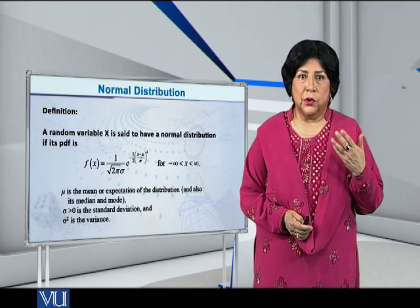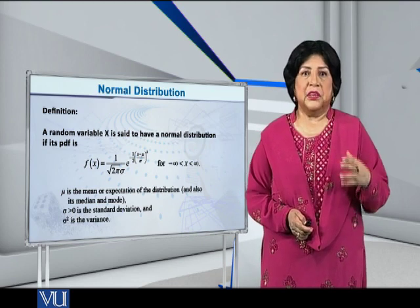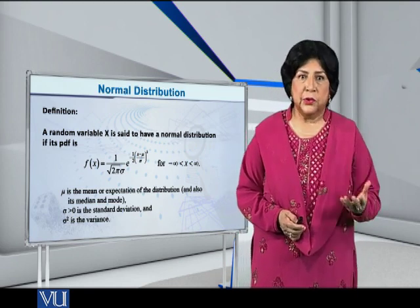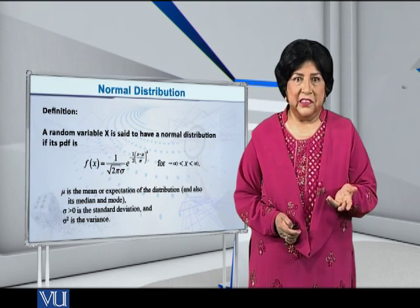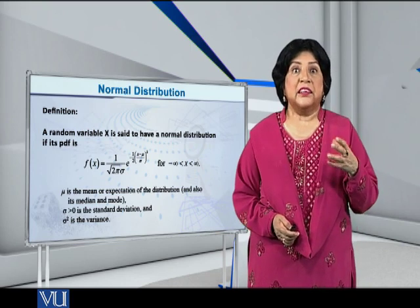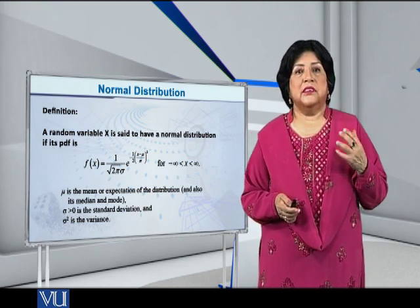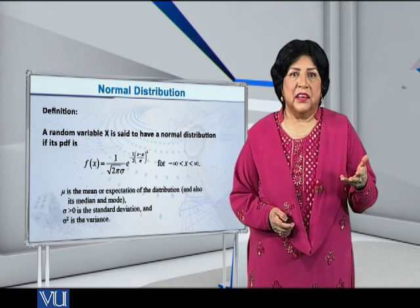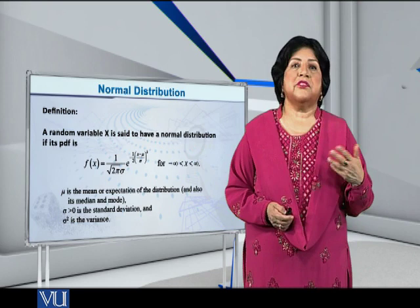Now, this is a continuous distribution extending from minus infinity to plus infinity. It covers the entire x-axis. This PDF has a complicated expression, but if you look carefully, there are two parameters: μ and σ. It can be proved that μ is actually the mean of this distribution and σ is the standard deviation.